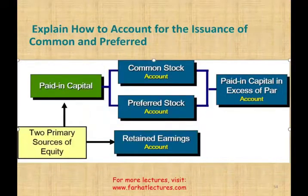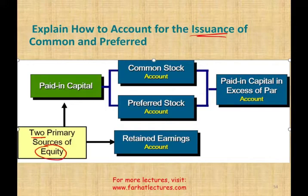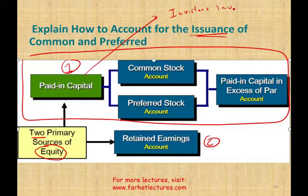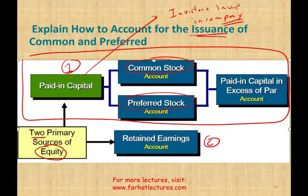In this session I'm going to explain how to account for the issuance of common and preferred stock. The two primary sources of equity for any company are paid-in capital and retained earnings. In this session we're going to focus on paid-in capital, which is what the investors or shareholders invest in the company — generally cash. They buy common stock and preferred stock, and we'll be introducing a new account called paid-in capital in excess of par. All these accounts are considered paid-in capital — they represent what the shareholders invested in the company.